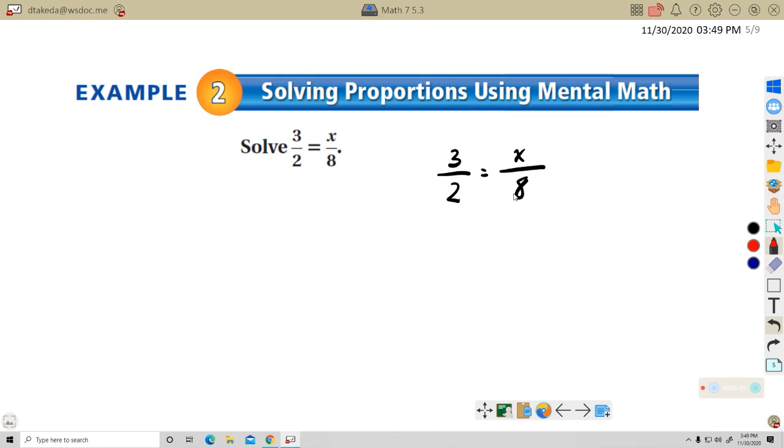Two and eight. Well, I know two times four will get me eight. So using that same kind of logic, three times four is going to get me 12. So three halves equals 12 eighths. So X equals 12. That one's pretty easy. Hopefully you understand equivalent fractions that well in order to be able to do that.